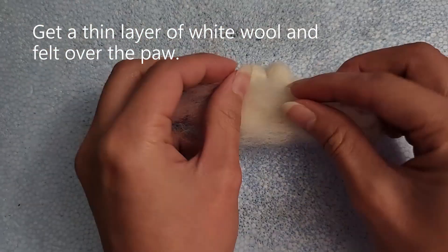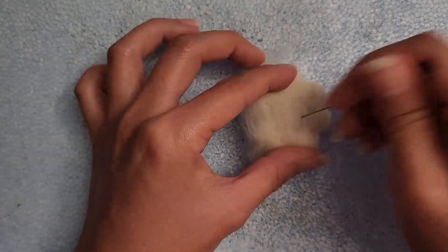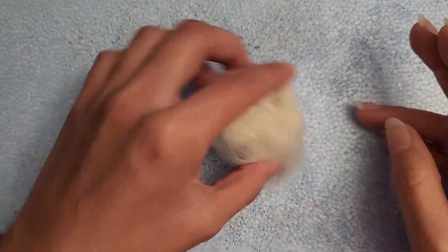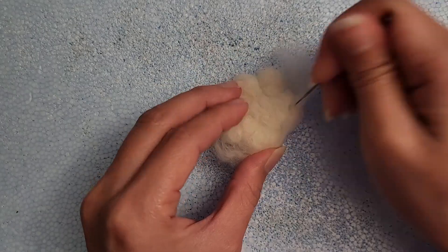Get a thin layer of white wool and felt over the paw to make it smoother. You can felt more wool as needed to make the shape how you want it. I'm just covering the entire paw with the layer of thin wool and in between the cracks as well.